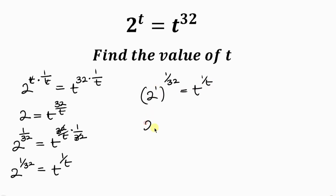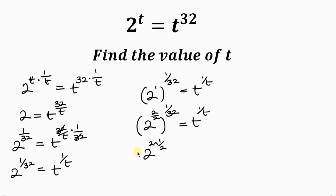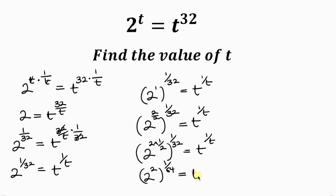Now 2 is the same as 2 to the 1, and 2 divided by 2 is 1, so we write this as 2 times 1 over 2, raised to the outer exponent of 1 over 32, equal to t to the 1 over t. Applying the law of indices, we multiply the powers: 1 times 1 is 1, all over 2 times 32 is 64. So we have 2 squared raised to the 1 over 64, equal to t to the 1 over t.